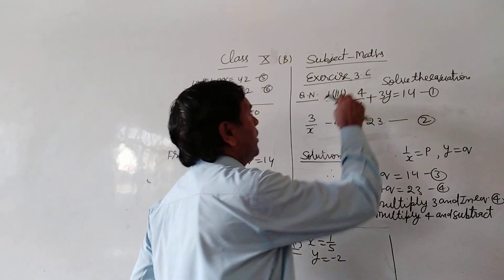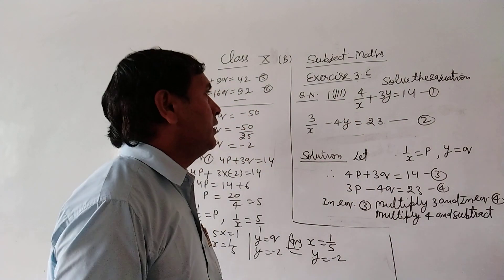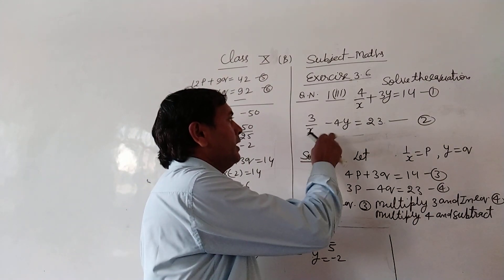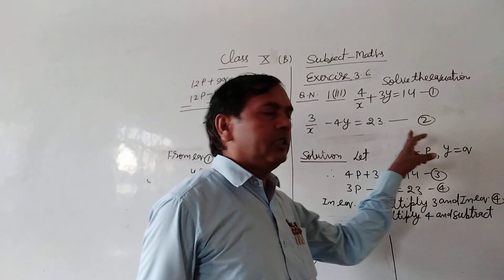First equation: 4/x + 3y = 14, equation 1. Second equation: 3/x - 4y = 23, equation 2.